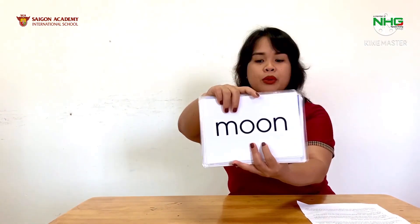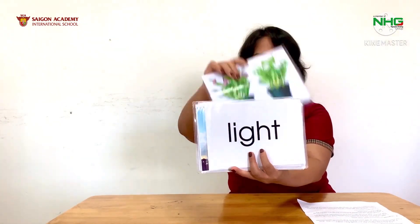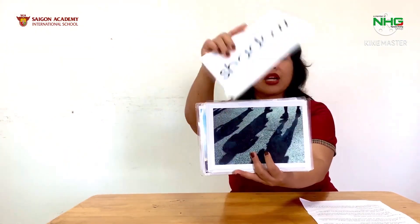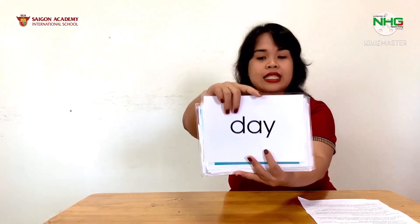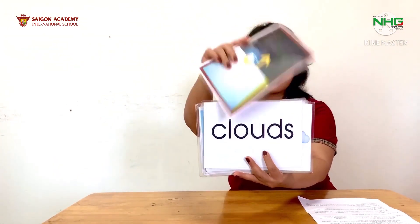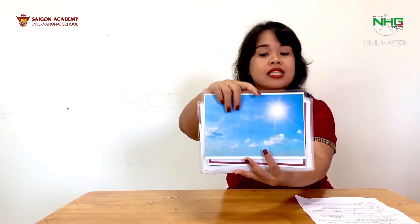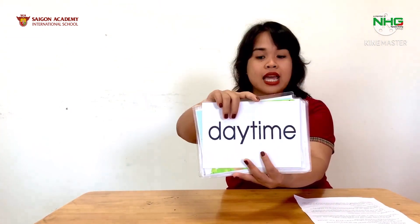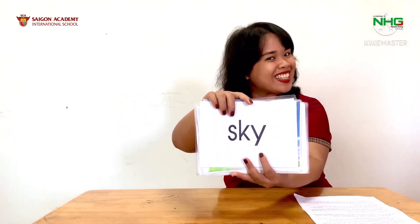Moon. Sun. Light. Plants. Shadow. Rainbow. Day. Clouds. Night. Bright. Sunlight. Daytime. Sky. Good job, kids.